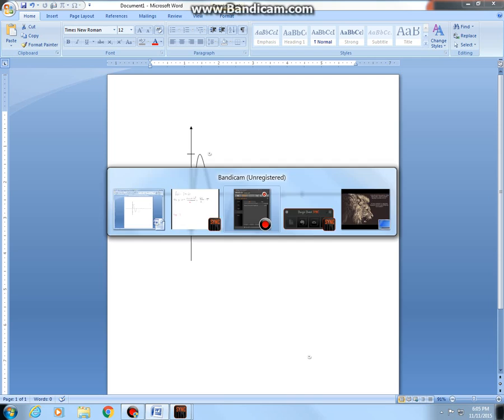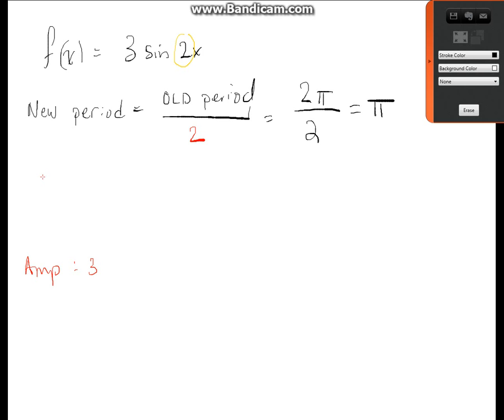Well, how do we do it? Well, we look at what's called the subintervals. And this will help us map it out. And all the subinterval is, is you're going to take the new period, and since there are four big spots, you're going to divide it by four. So here, that means the new period we just calculated is pi. So this is just going to be pi over 4. So that means we have all the information we need to graph.